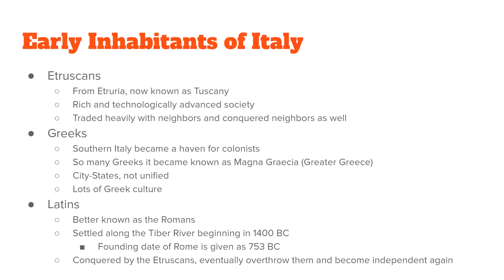Last but not least, we have the Latins. The Latins lived along a river called the Tiber. They are a larger group of people, and because they lived in the city of Rome they eventually became known as Romans. So Romans and Latins are interchangeable, and that's why the language of Rome was called Latin — because they were Latin people.